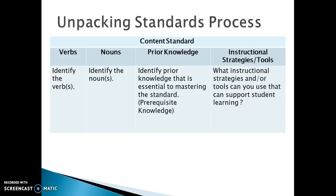Here is an overview of the unpacking standards process. Here is a matrix which has four columns for the particular content standard. We're going to look for the verbs in each standard and identify those verbs or action statements. We're also going to identify the nouns from the content standard, which are the particulars needed to support the action that students are doing. We'll also itemize and list the prior knowledge and prerequisite skills needed to master the standards, and different instructional strategies or tools to support student learning. Those four main components — verbs, nouns, prior knowledge, and instructional strategies and tools — are essential to the unpacking process.